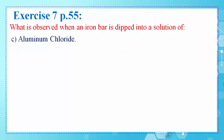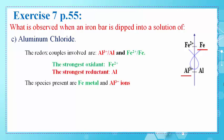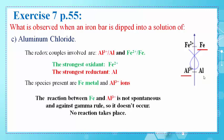In part C, we are asked what is observed when an iron bar is dipped into a solution of aluminum chloride. The redox couples are Al3+/Al and Fe2+/Fe. The species present are Fe metal and Al3+ ions. The strongest oxidant is Fe2+, which does not exist, and the strongest reductant is Al, which also does not exist. Therefore, the reaction between Fe and Al3+ is not spontaneous — it is against the gamma rule, so no reaction takes place.